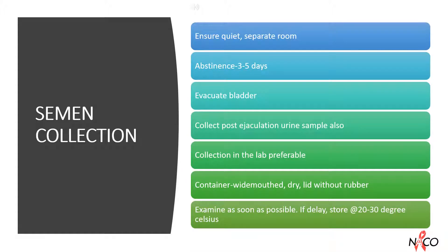For semen collection, the equipment required is a sterile, dry, wide-mouthed plastic container. Ensure a quiet, separate room for collection. A period of abstinence between 3 and 5 days is mandatory. Longer periods usually result in higher semen volumes but lower motility. If the period of abstinence is very long, a second sample is to be collected after 2 hours to assess motility. The bladder should always be evacuated prior to ejaculation. A post-ejaculation urine sample must also be collected if retrograde ejaculation is suspected.